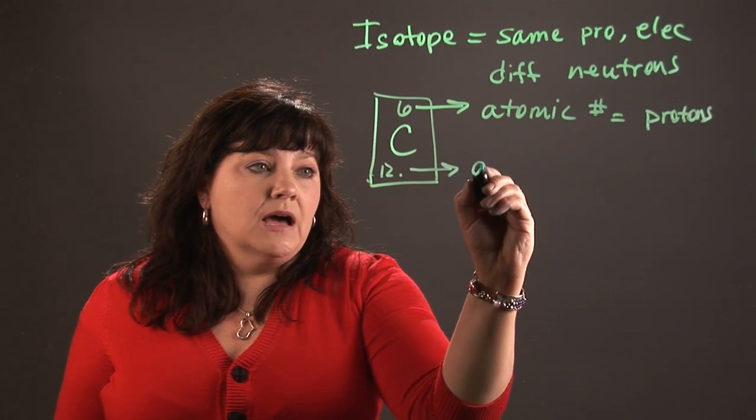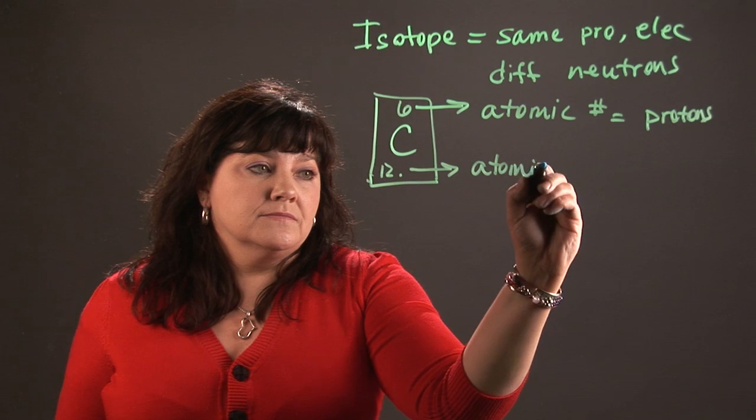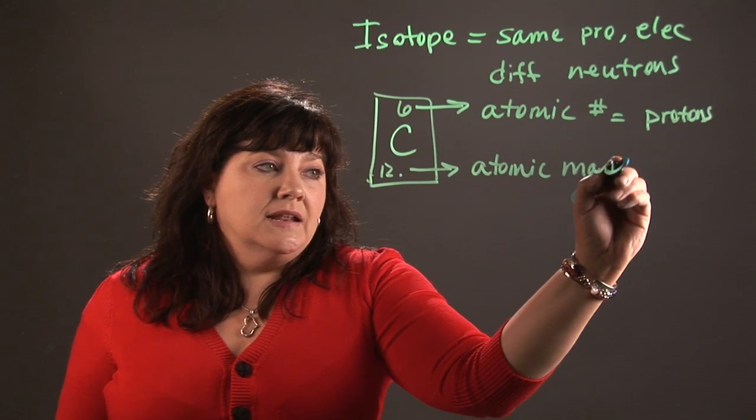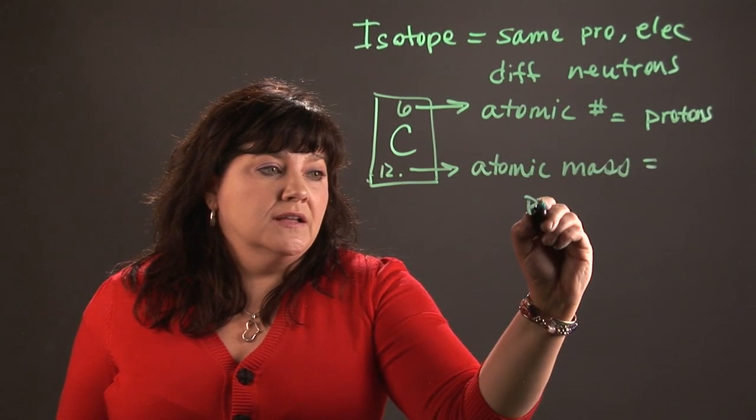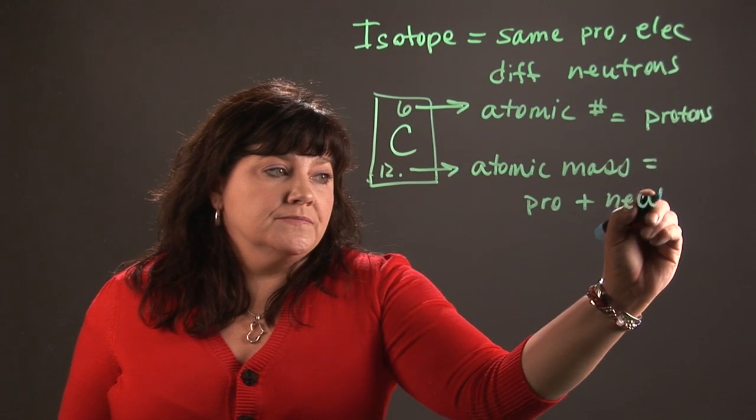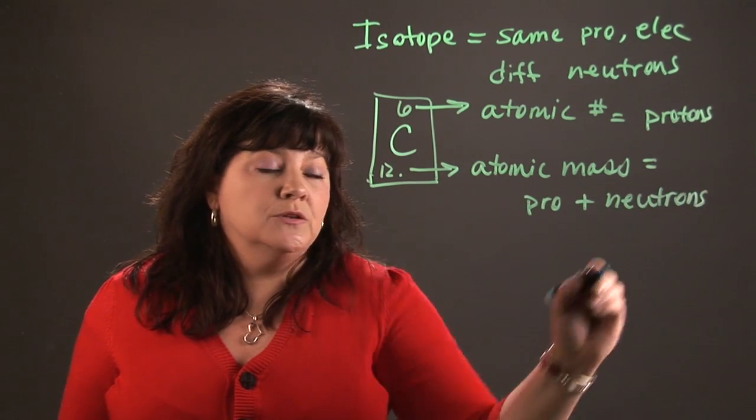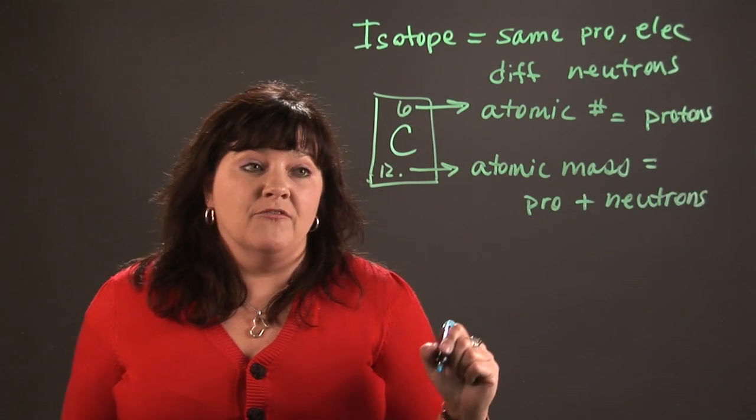This number down here is the atomic mass. An atomic mass is protons plus neutrons because the protons and the neutrons are the things in the atom that actually have mass.